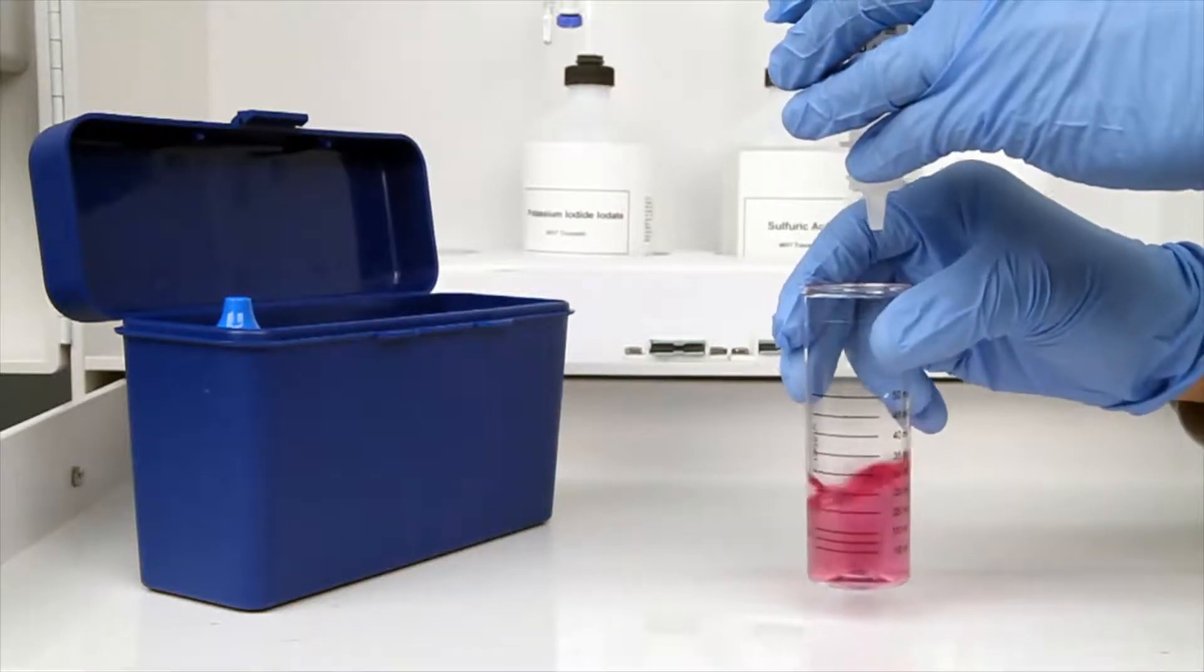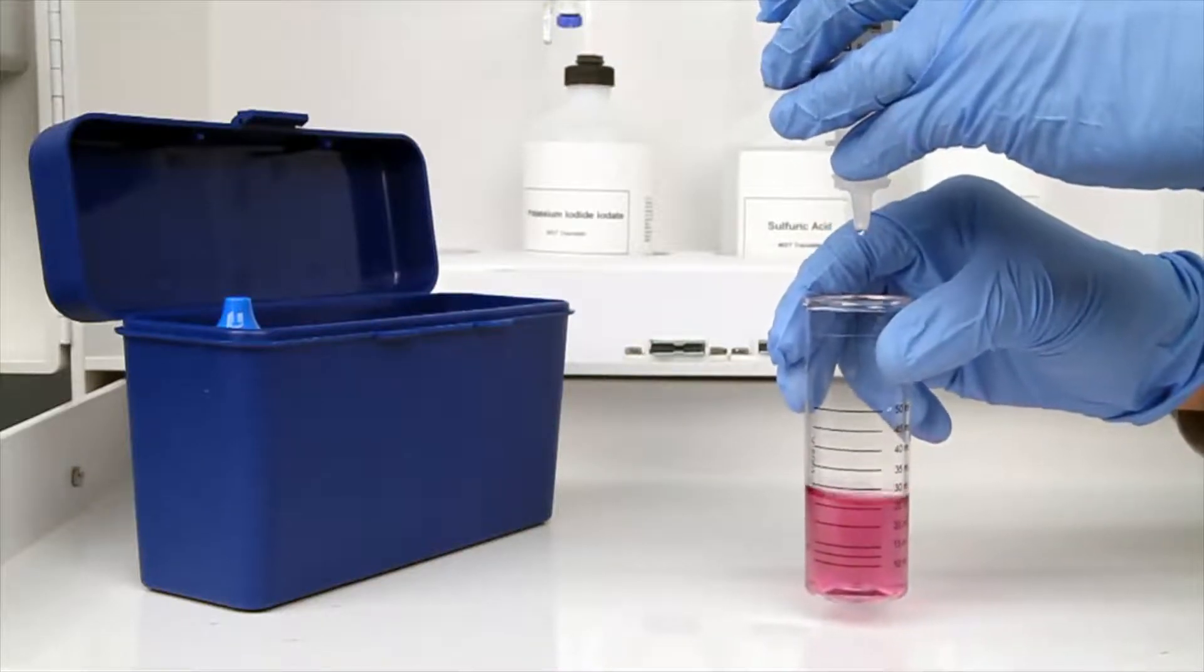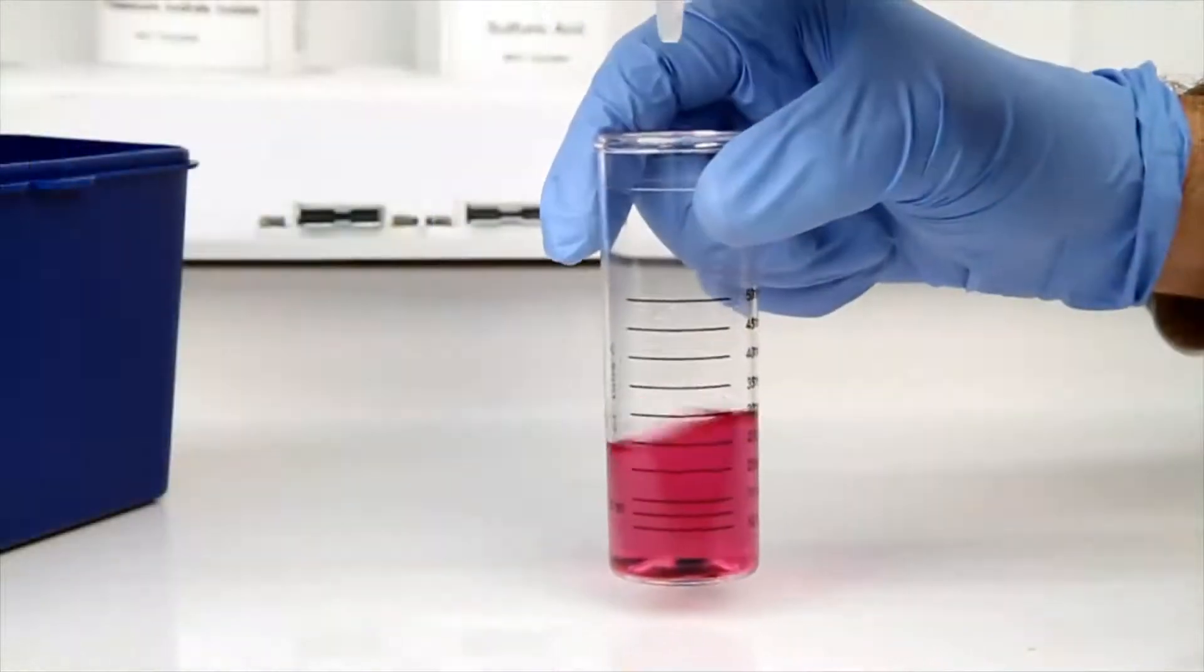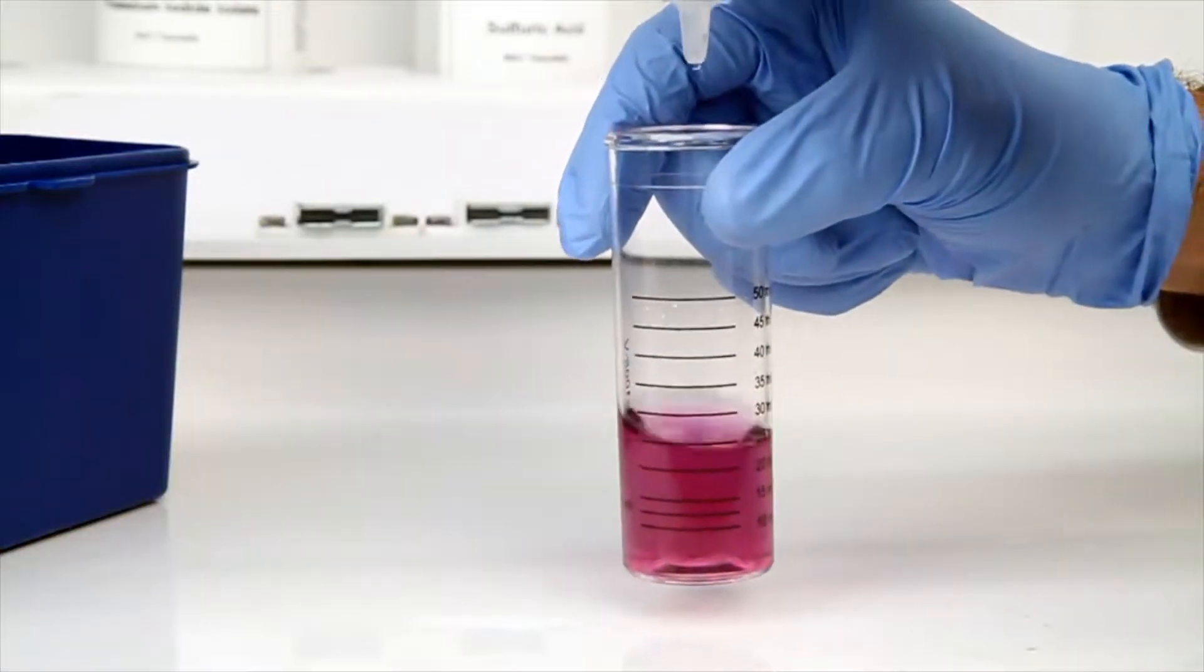The bottle of titrant contains a dropper tip, therefore it's important to hold the bottle vertically to make sure you get a consistent drop size. After the addition of each drop of titrant, you want to swirl the vial to make sure the sample is properly mixed.